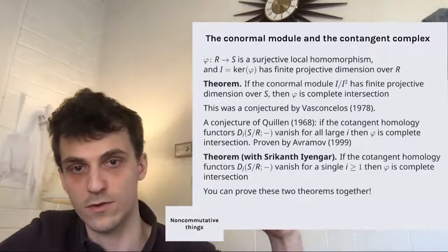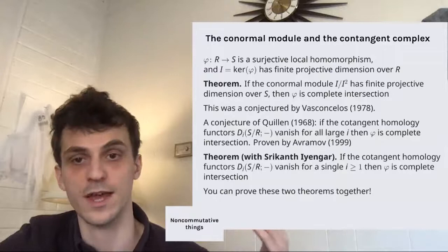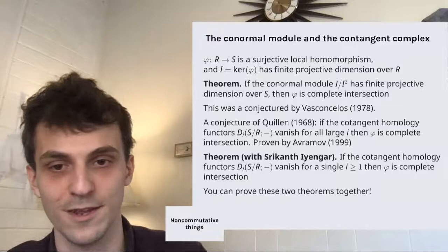The cool thing is that these two theorems — the Vasconcelos result and the Quillen result — can be proved together. In our preprint, we have a theorem of which these two results are special cases. It turns out these two conjectures are much more connected than they seem.